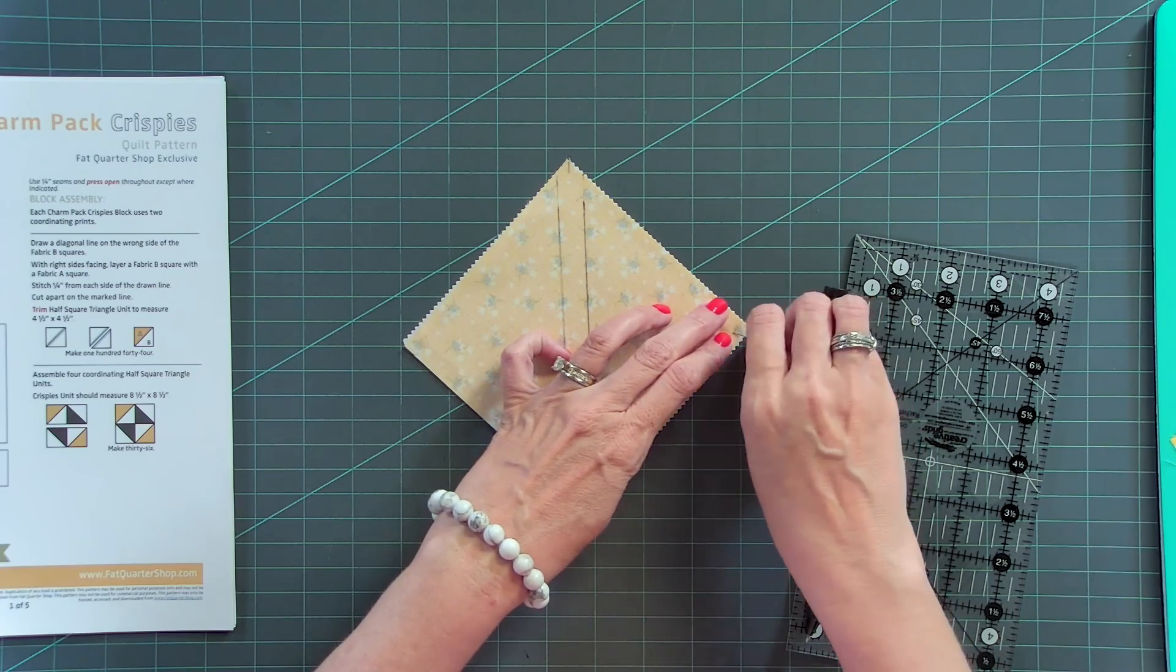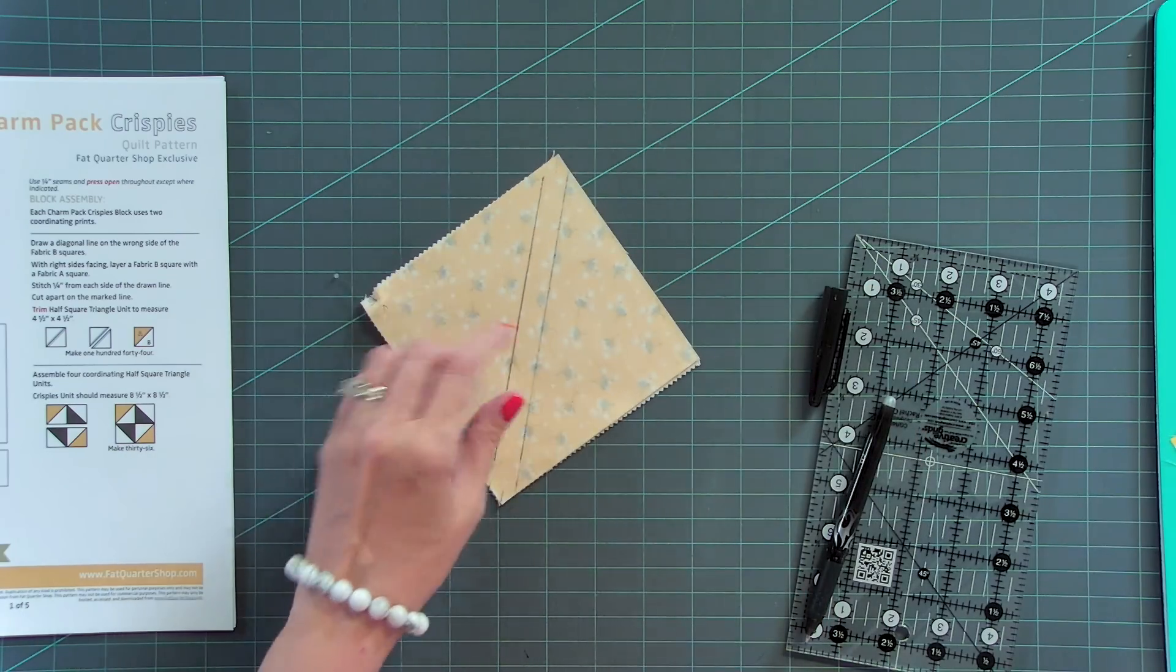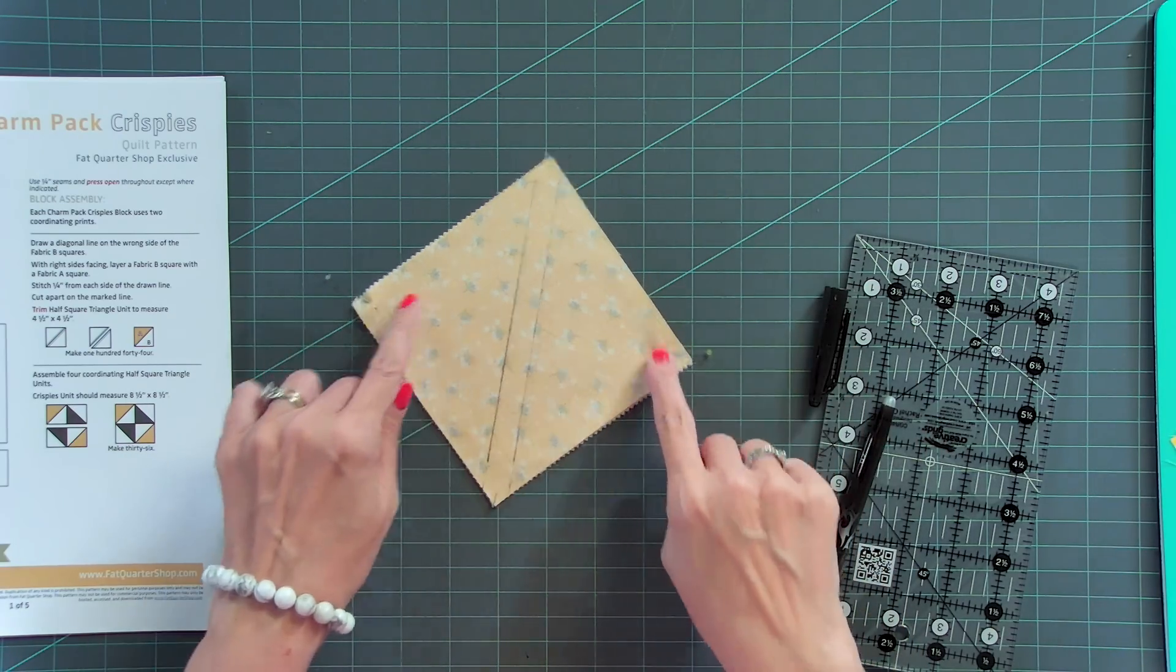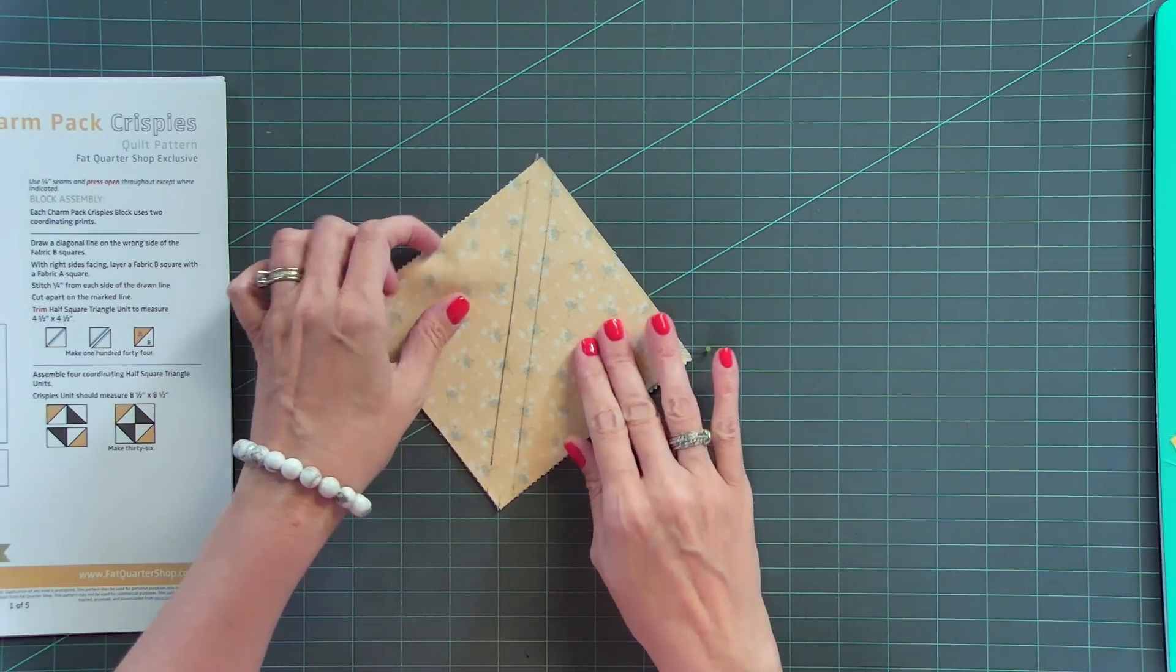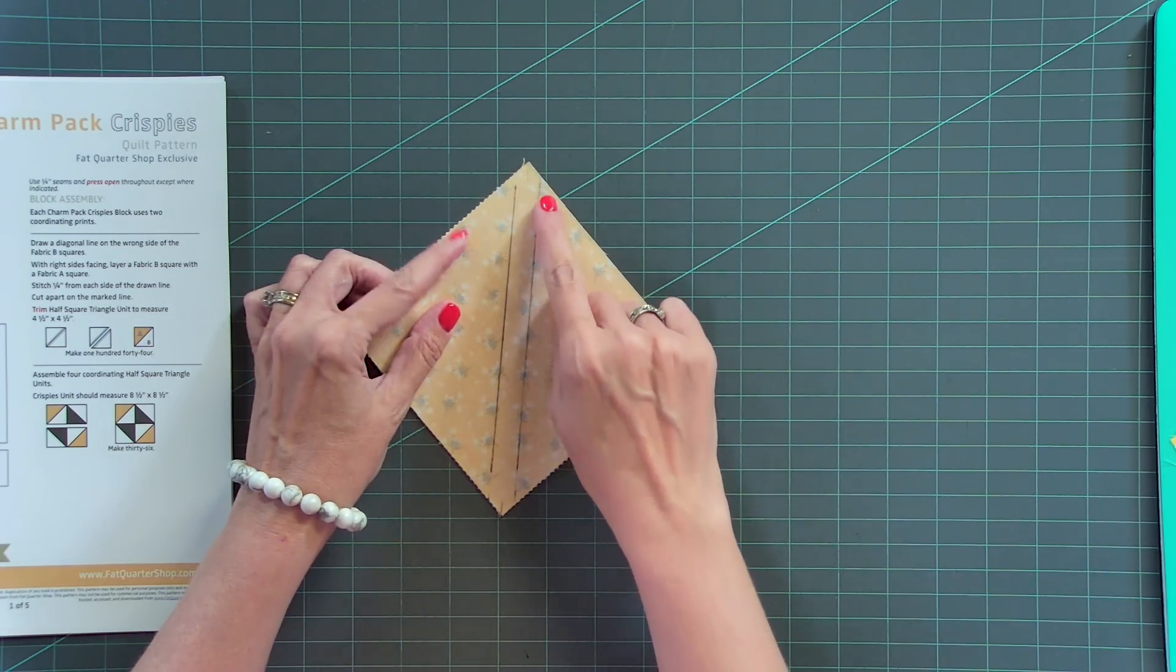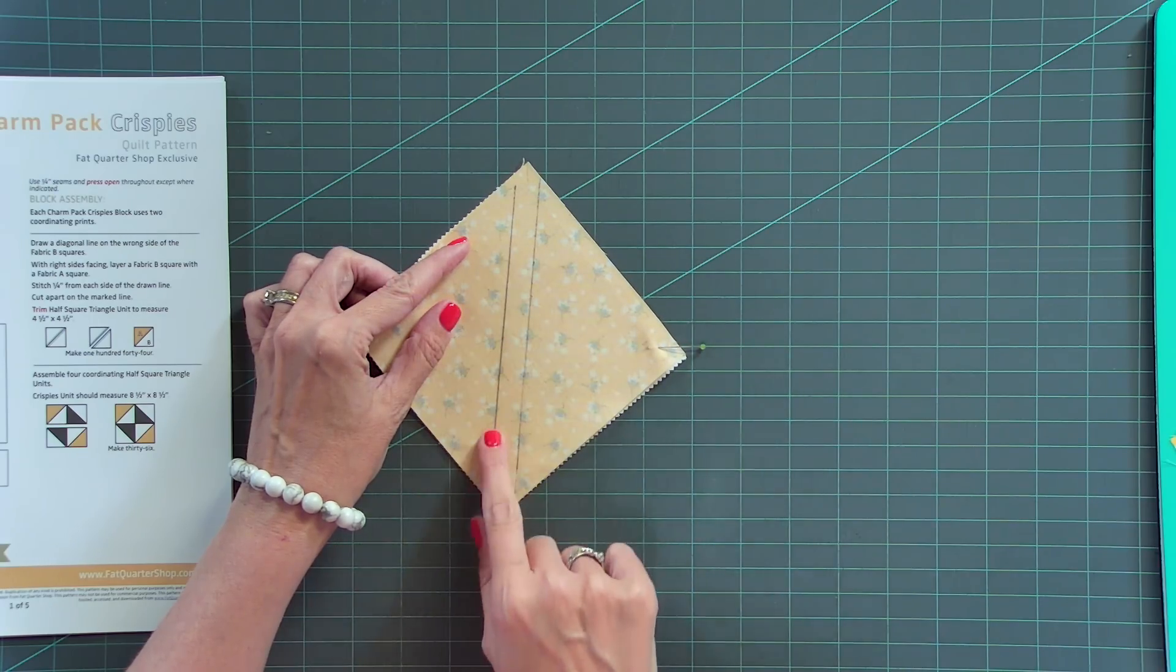Now here, I would go ahead and use two pins opposite of the lines. And from here, what I would do is go to the sewing machine and I'm gonna be using Aurifil Color 2000 and just stitch directly on those lines.